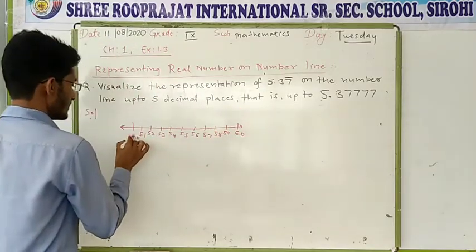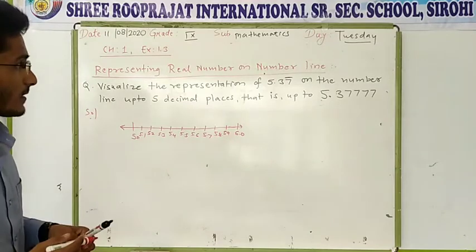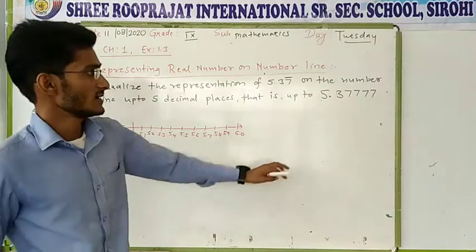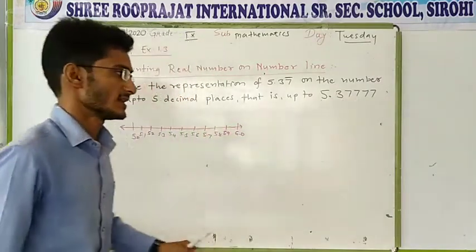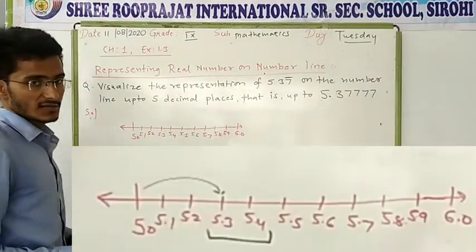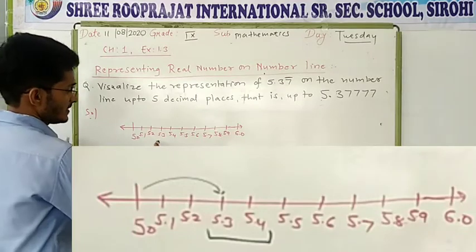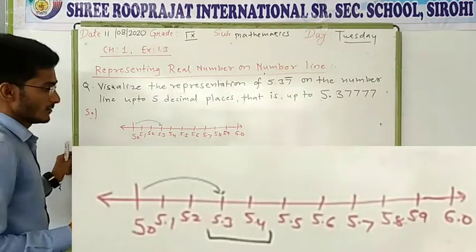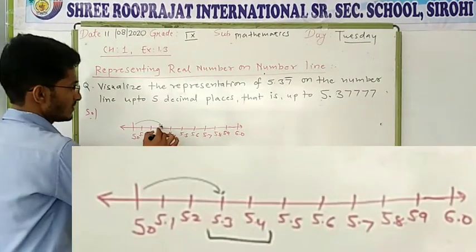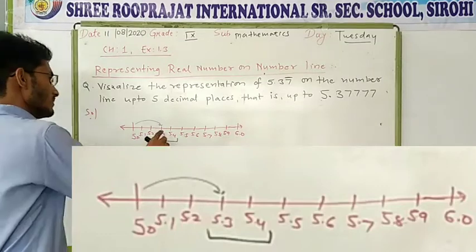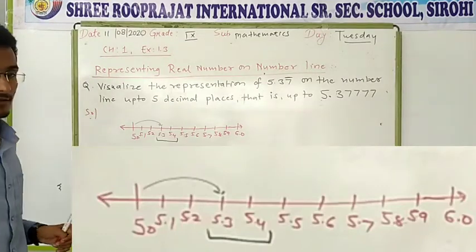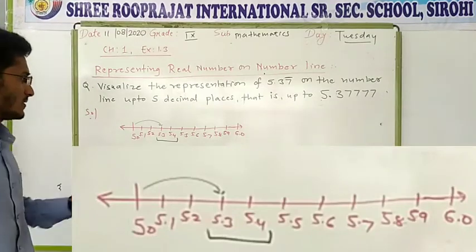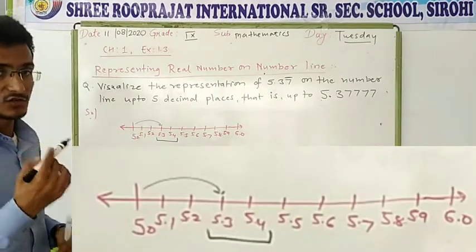So now, where is your number? The first digit after the decimal is 3, but after decimal 3 it is a 7. So your number will be in between — first you have to complete 5.3, then you will move to 5.37. The number 5.37 will be in between 5.3 and 5.4. Now it is not visible there, so it is magnified — that means we will zoom in using a magnifying glass.